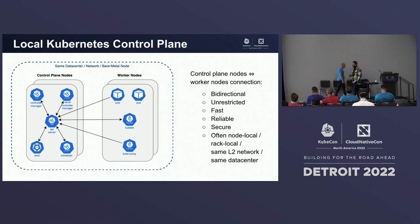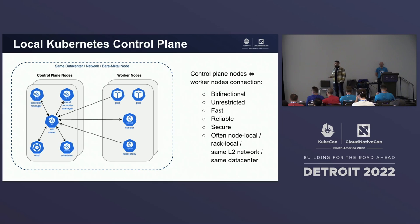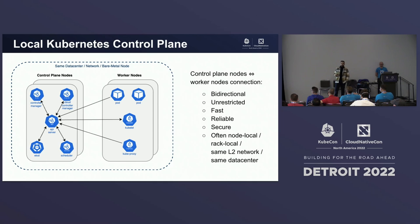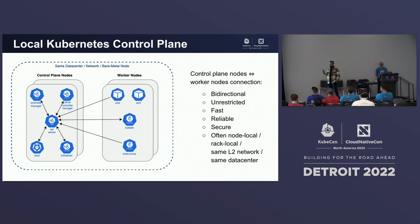Usually a Kubernetes cluster looks like this: you have a master control plane node, and then worker nodes. The API server and the whole control plane components are deployed on the same node, and the worker nodes talk with that. This setup has a bidirectional connection between worker nodes and the control plane — it's unrestricted, fast, reliable, secure, and often node-local on the same layer-2 network. Everything works nicely.